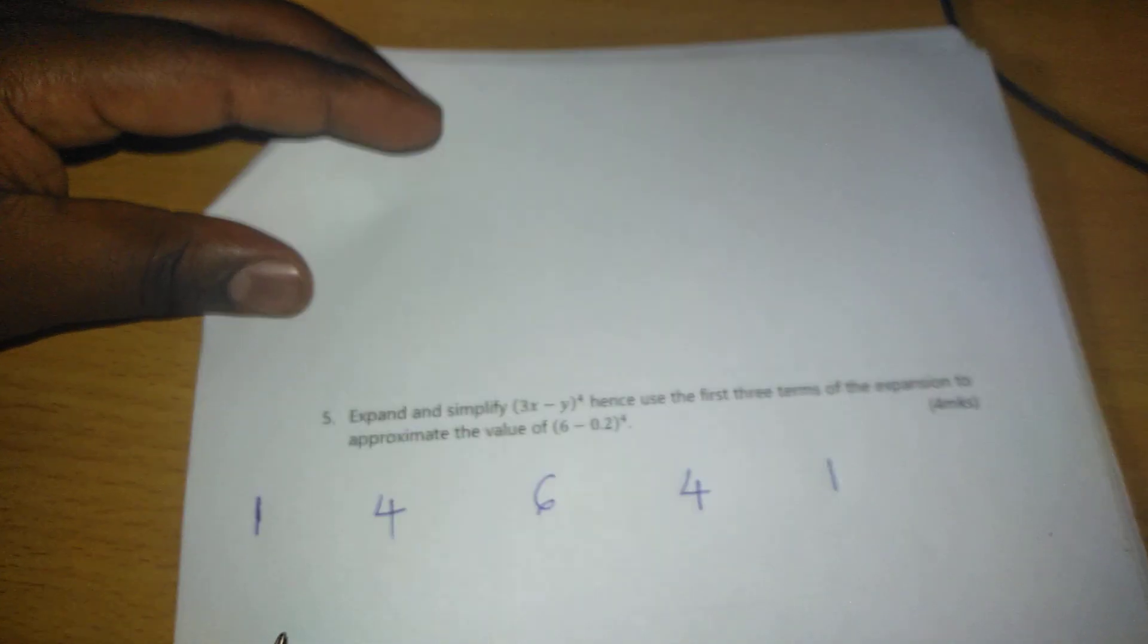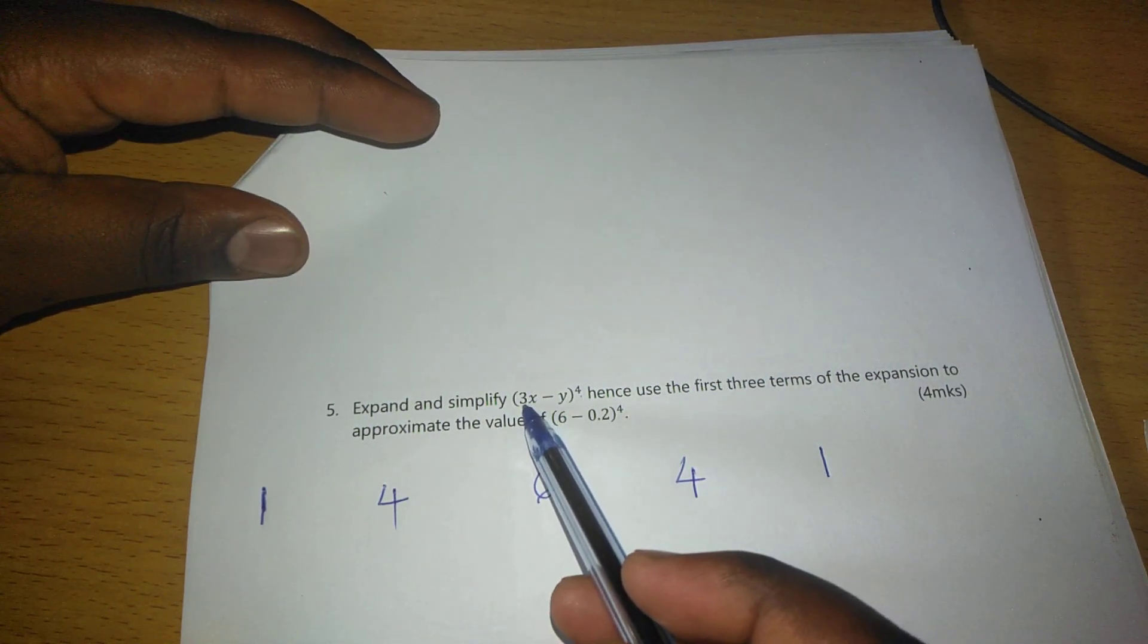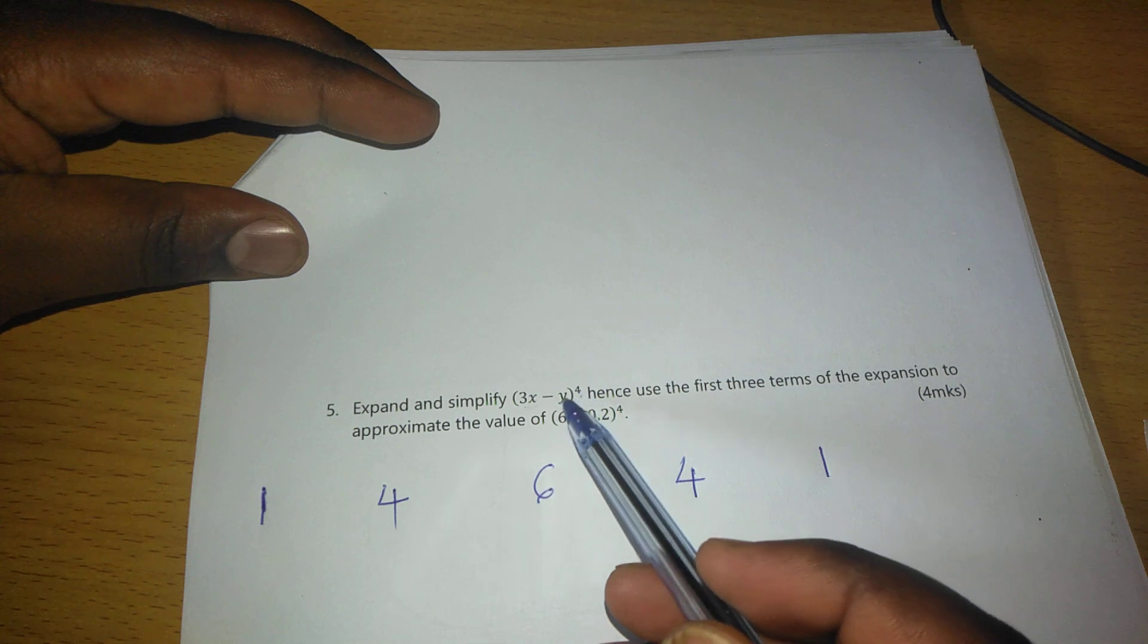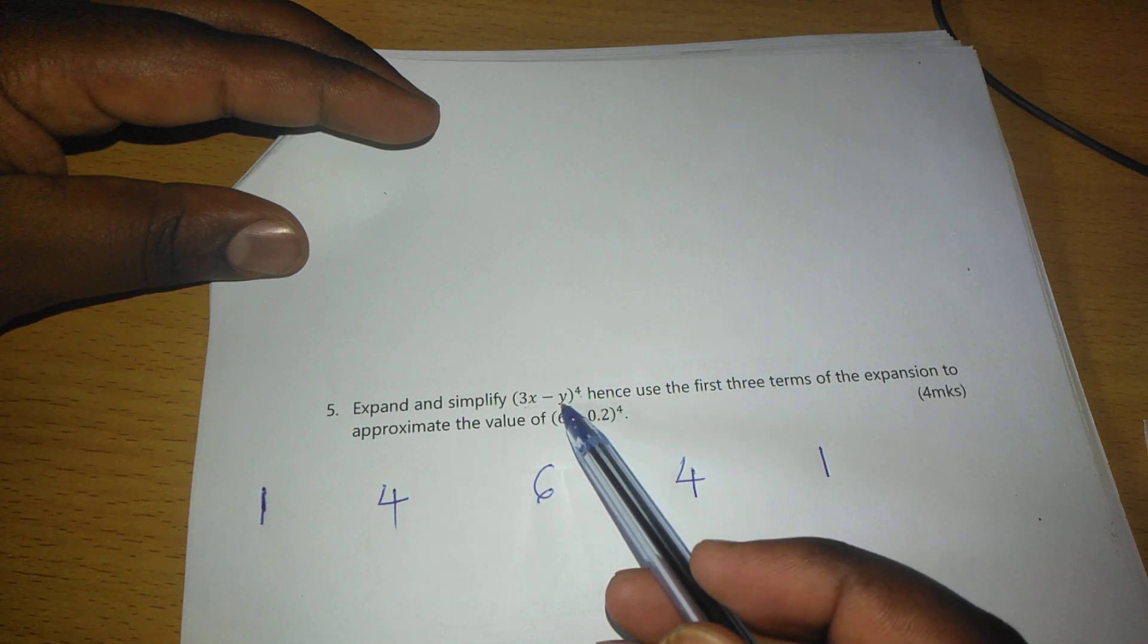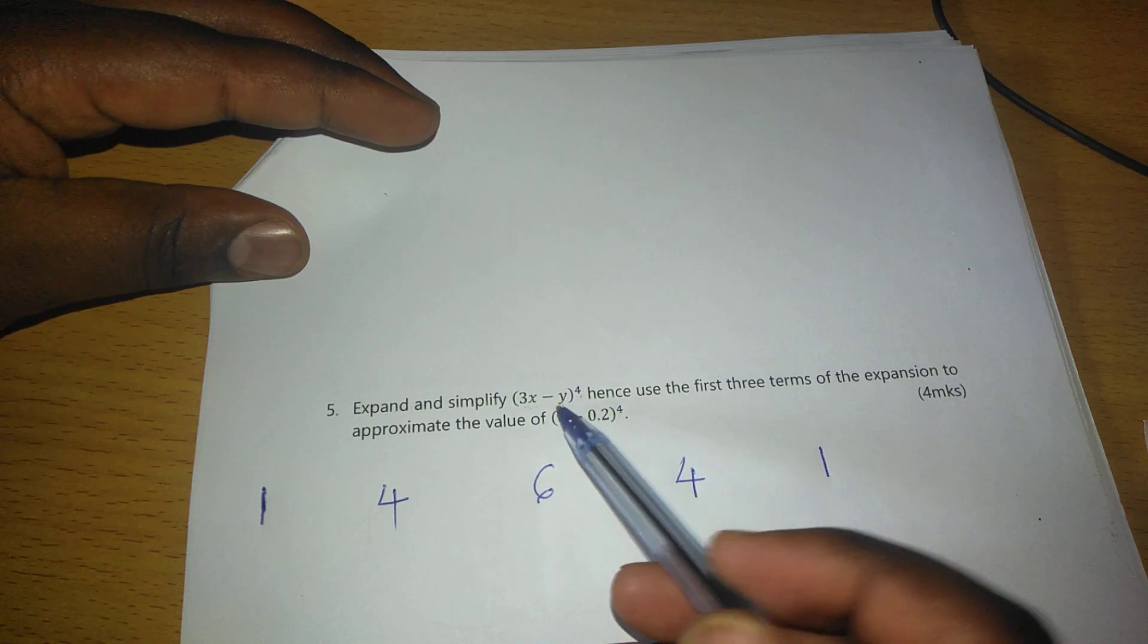Therefore, after listing all the coefficients, now we start raising the first term to power 4 and the other one to 0, such that from there, the first term can decrease in power as the other one increases in power.